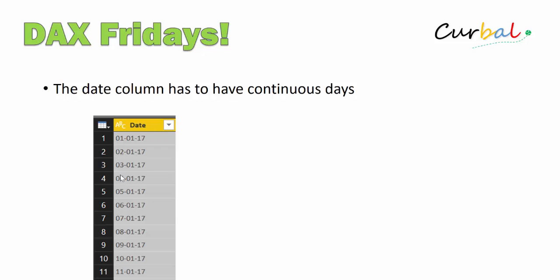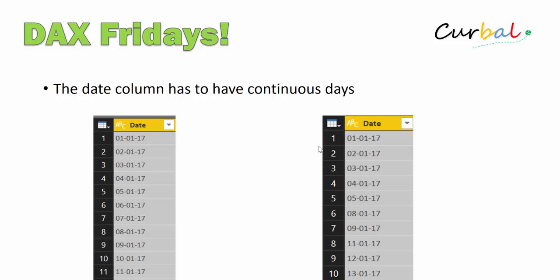So consecutive means: the first, the second, the third, the fourth, the fifth — one after another. Here is an example of a table that does not have it. It starts with the first, second, third, fourth, fifth, and then jumps to the eighth and ninth. This is typical for, for example, a sales table where businesses are not active during weekends. That means your database will not record any sale during the weekend and that date will simply not be there.